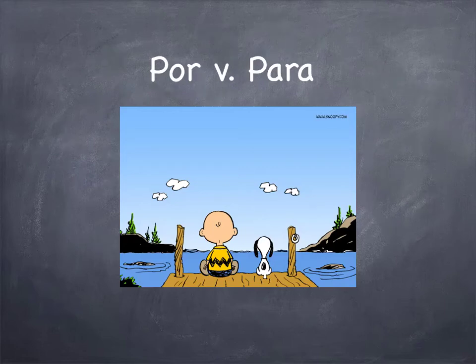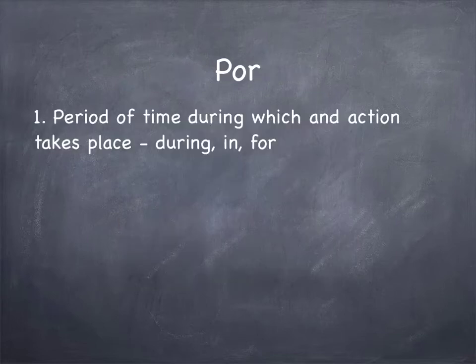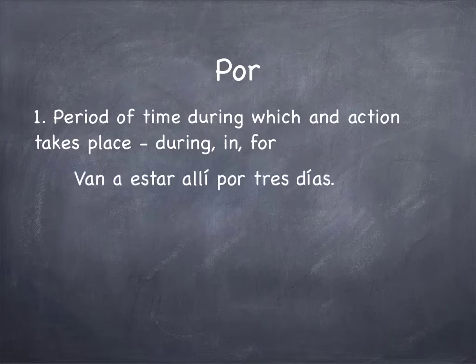In this lesson, we're going to review when to use the preposition por and when to use the preposition para. So let's begin with the uses of por. We use por to indicate a period of time during which an action takes place. It's the equivalent in English of during, in, or for. For example: Van a estar allí por tres días — they are going to be there for three days.